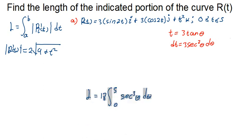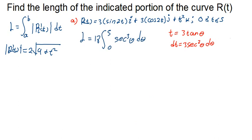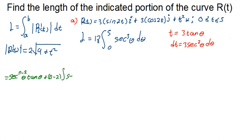To integrate sec³(θ), we can use integration by parts or recall the reduction formula. The reduction formula for secⁿ is: (1/(n−1)) × [sec^(n−2)(θ) × tan(θ) + (n−2) × ∫sec^(n−2)(θ) dθ]. We can use this or recall it as needed.